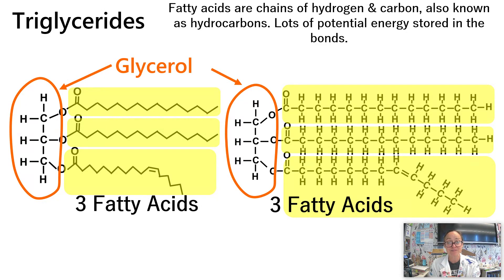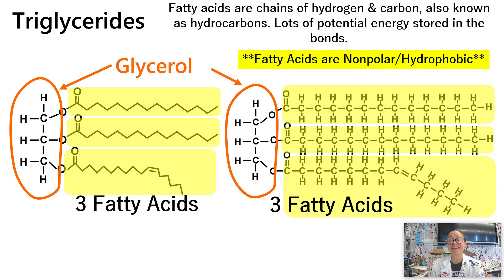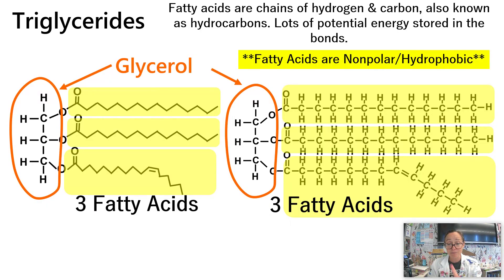We'll see in the mitochondria and the electron transport chain how important those electrons are in that covalent bond, and those hydrogens and their role in producing ATP. There's lots of stored potential energy in these bonds of the fatty acid chains. Drawing a triglyceride would take forever, so the image on the left is the shorthand version — the zigzags represent carbons in that hydrocarbon chain. It's super important to recognize that these fatty acids are nonpolar and hydrophobic, equally sharing electrons with no partial positive or negative regions, and they repel water.